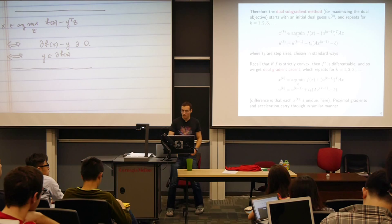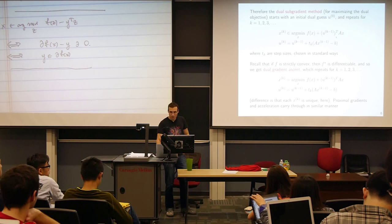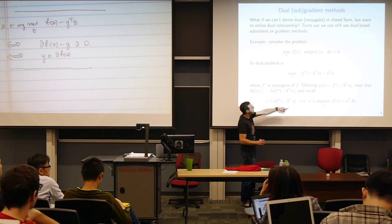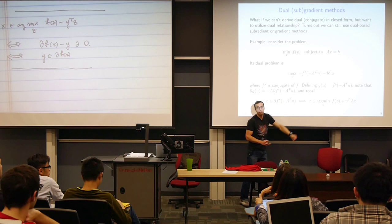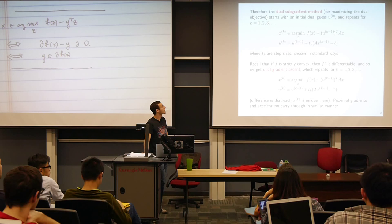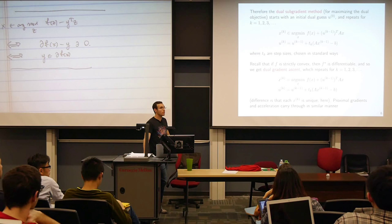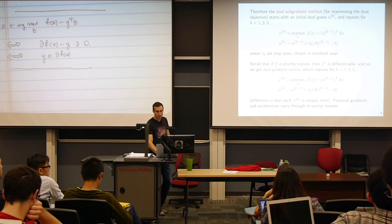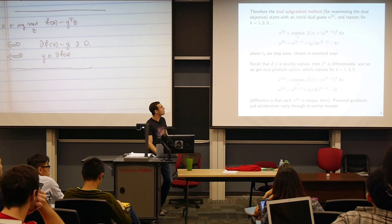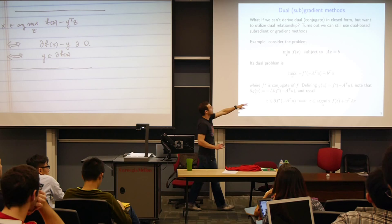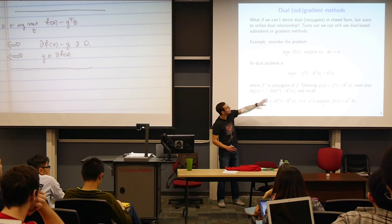Once we solve that minimization and get x, the subgradient of our criterion becomes −A times x minus b. And we move in the direction of the subgradient accordingly. So Ax minus b functions as a subgradient of our dual criterion. This is nothing other than applying dual subgradient ascent with these step sizes on the dual variables u, moving repeatedly in the direction of the subgradient. We're computing the subgradient in a roundabout way because we don't know f*, using the inner minimization to find it.